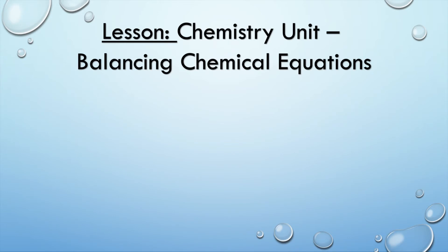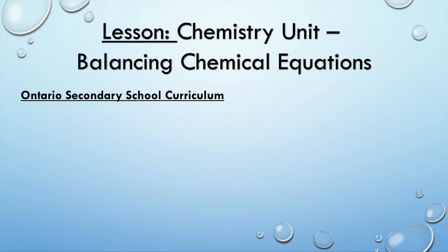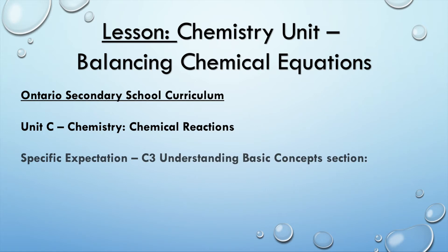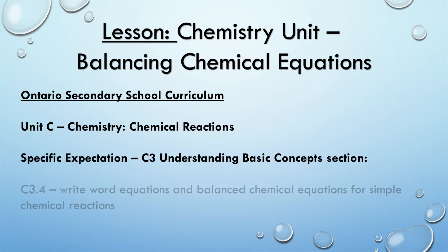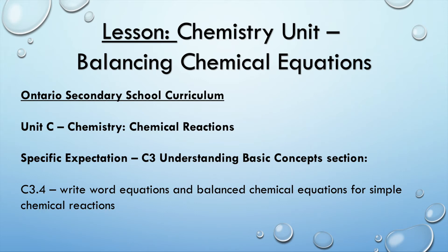Grade 10 science is a compulsory credit for students to graduate with their Ontario Secondary School diploma. The curriculum breaks the course into five units, and the third one is titled Unit C, Chemistry: Chemical Reactions. The specific expectation you are covering in this lesson is expectation C3.4, which states students will learn how to write word equations and balanced chemical equations for simple chemical reactions.